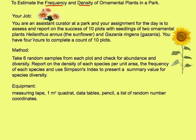The two ornamentals are Helianthus annuus, the sunflower, and Gazania ringens, also known as Gazania. You have four hours to complete a count of ten plots, so time does not permit counting every seedling. Therefore you need a sampling methodology: take six random samples from each plot, checking for abundance and diversity. Equipment includes a measuring tape, a one-meter-square quadrat, data tables, a pencil, and a list of random number coordinates.